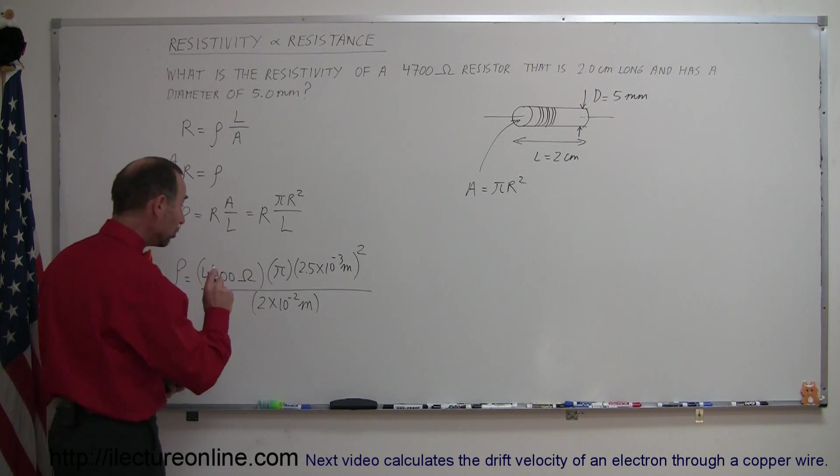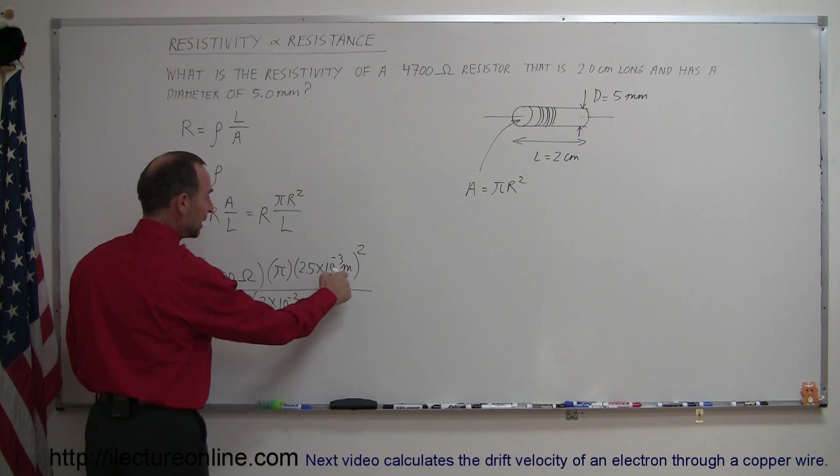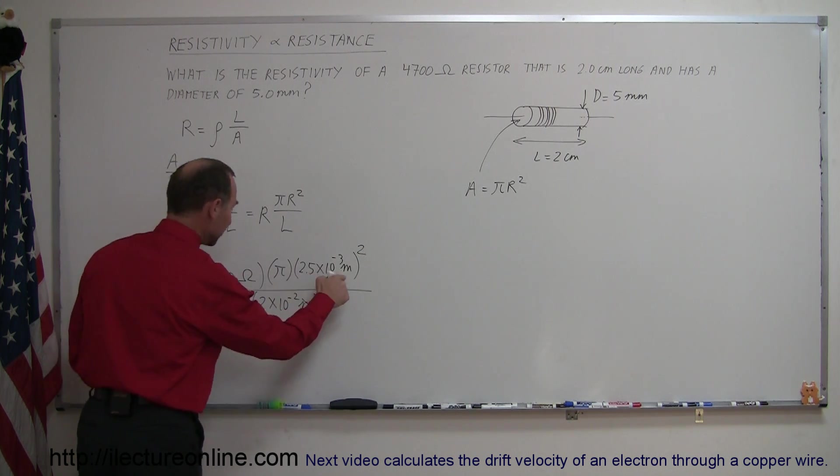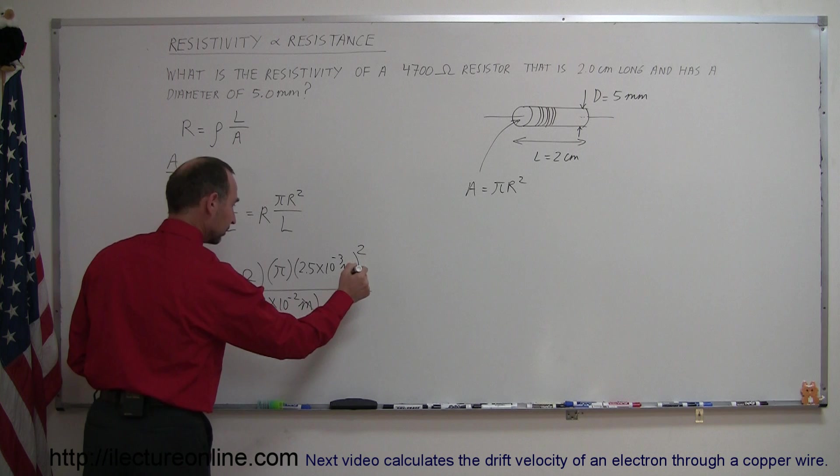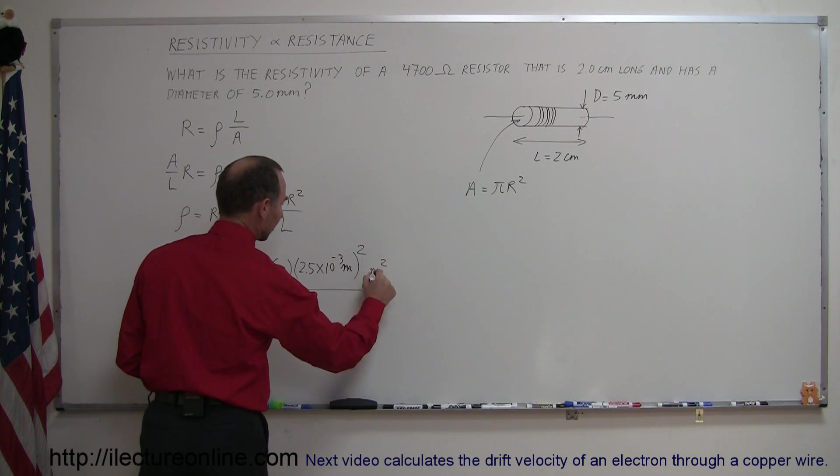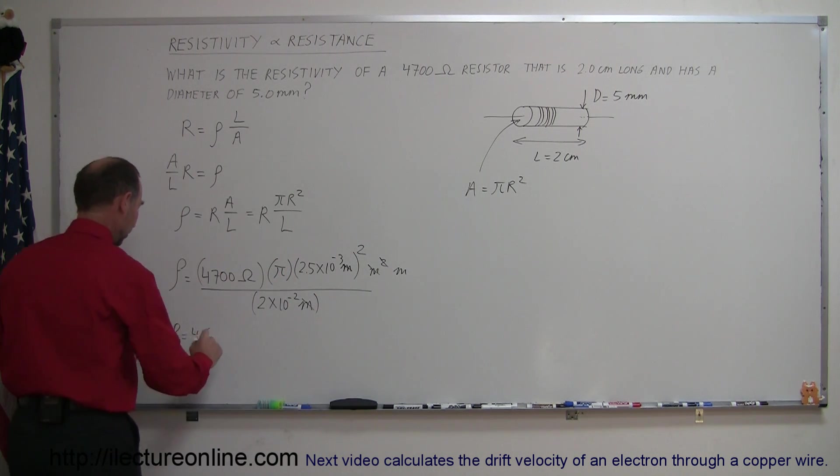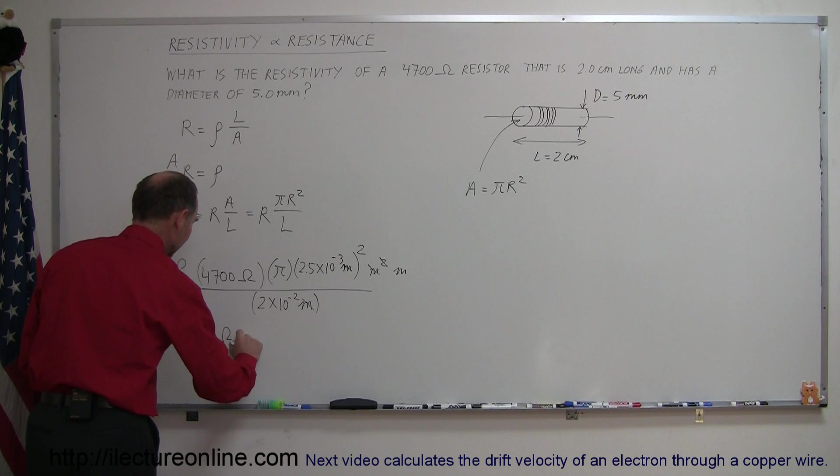4.6. And the units—we have meters and meters squared, so that would be ohms times meters. Actually, if I'm canceling that out, I need to cancel one of those out. That just simply becomes meters. That's a better way to write it. So 4.6 ohm-meters.